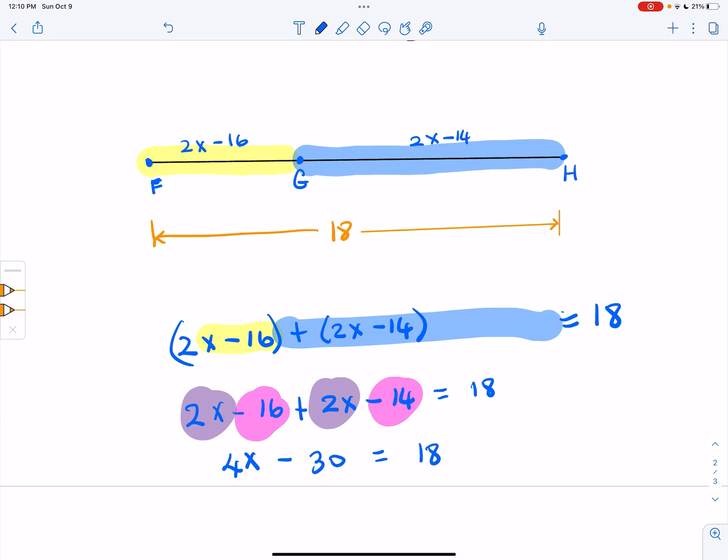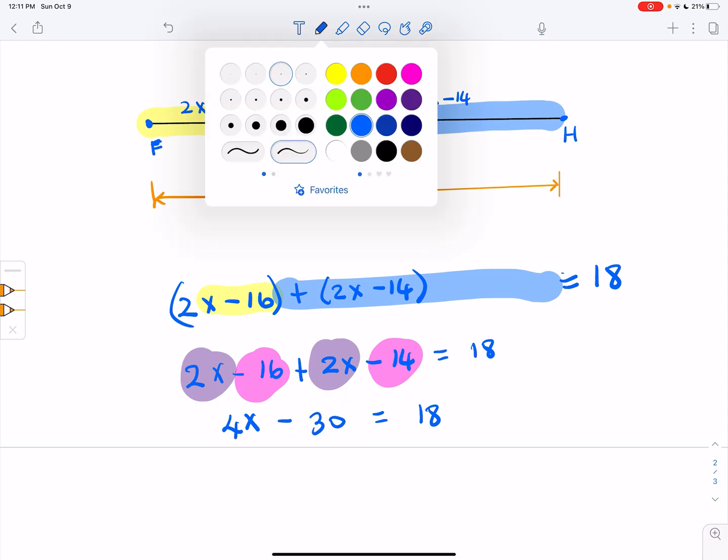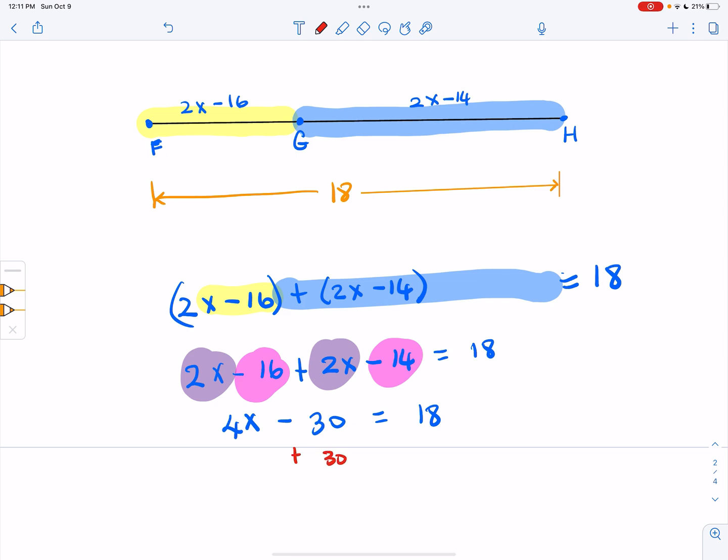All right, so now we're almost done. We're just going to try to isolate the x. As we're trying to isolate the x, we notice over here, we have 30 subtracted. We have to do the inverse operation. So add 30 to both sides.